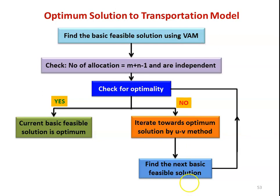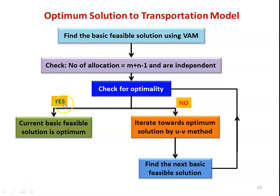Using the UV method, we find the next basic feasible solution. Once again we have to check for optimality and satisfy the condition — yes or no — and based on that we continue with the problem.